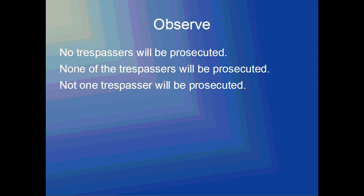Just to be clear, there is some potential ambiguity in that second way of expressing 'No trespassers will be prosecuted.' Because, let's say there are two trespassers that will be prosecuted — then it could be true that 'not one trespasser will be prosecuted' because two will. But that's not what is meant. It means that there is no trespasser that will be prosecuted. However, it could be interpreted as meaning that more than one trespasser will be prosecuted.